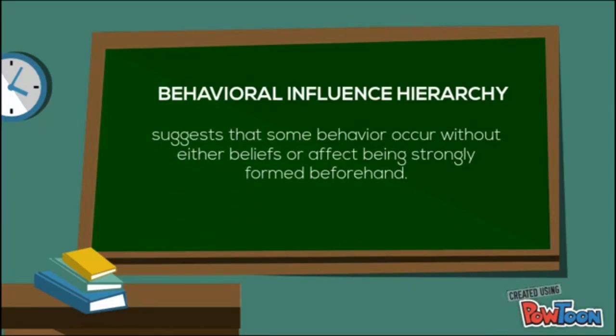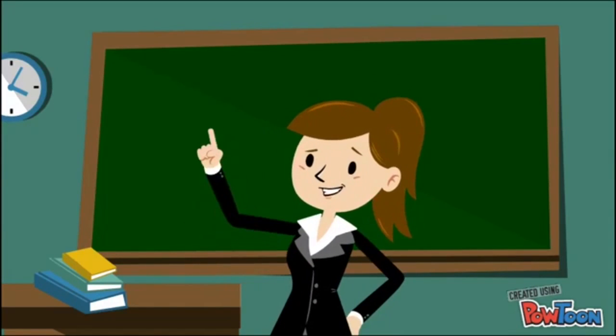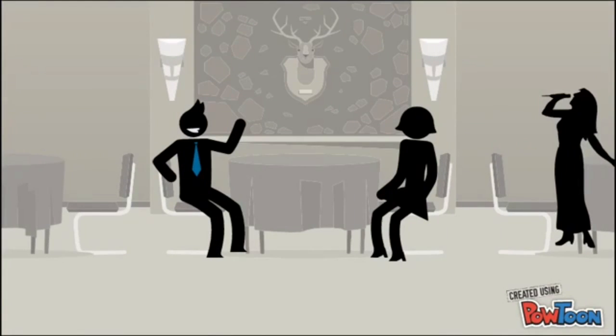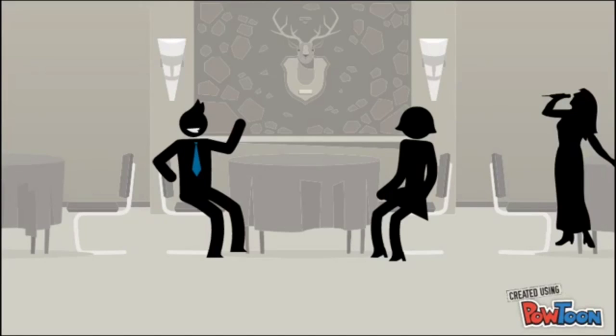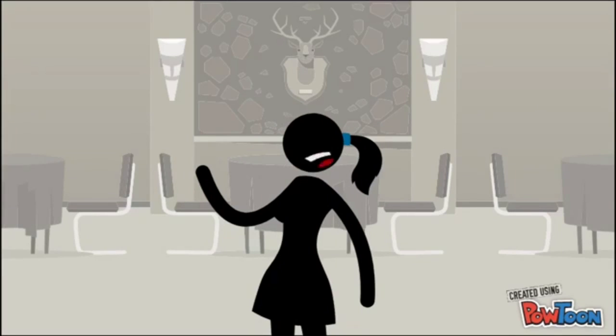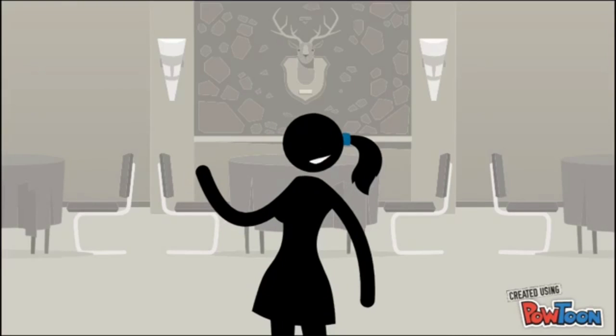The behavioral influence hierarchy suggests that some behaviors occur without either beliefs or affect being strongly formed beforehand. Strong environmental pressures lead to behaviors without belief or affect formation. An example of this may be found when a consumer eats at a restaurant playing soft, slow music. Restaurant managers know that one way to get people to relax and order more drinks is to play soft and soothing music. Consumers have been conditioned to slow down and relax when slow music is played. As such, behavior is influenced by environmental cues. This means that there are times when behaviors may be performed in the absence of strong beliefs or feelings.